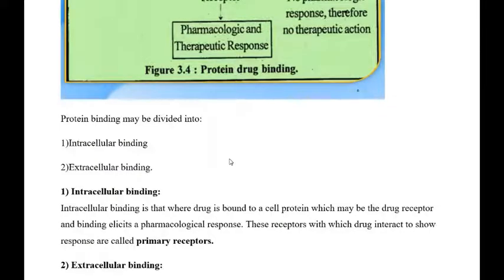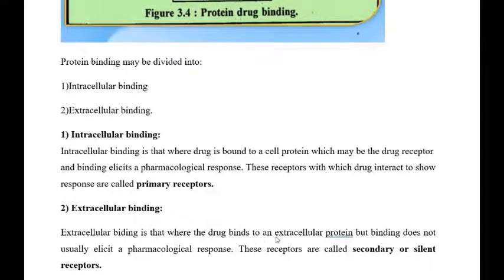Protein binding may also be divided into intracellular binding and extracellular binding. Intracellular binding is where the drug is bound to a cell protein which may be a drug receptor, eliciting a pharmacological response. These receptors with which the drug interacts to show responses are called primary receptors. Extracellular binding is where the drug binds to an extracellular protein but does not usually elicit a pharmacological response; these receptors are called secondary or silent receptors.